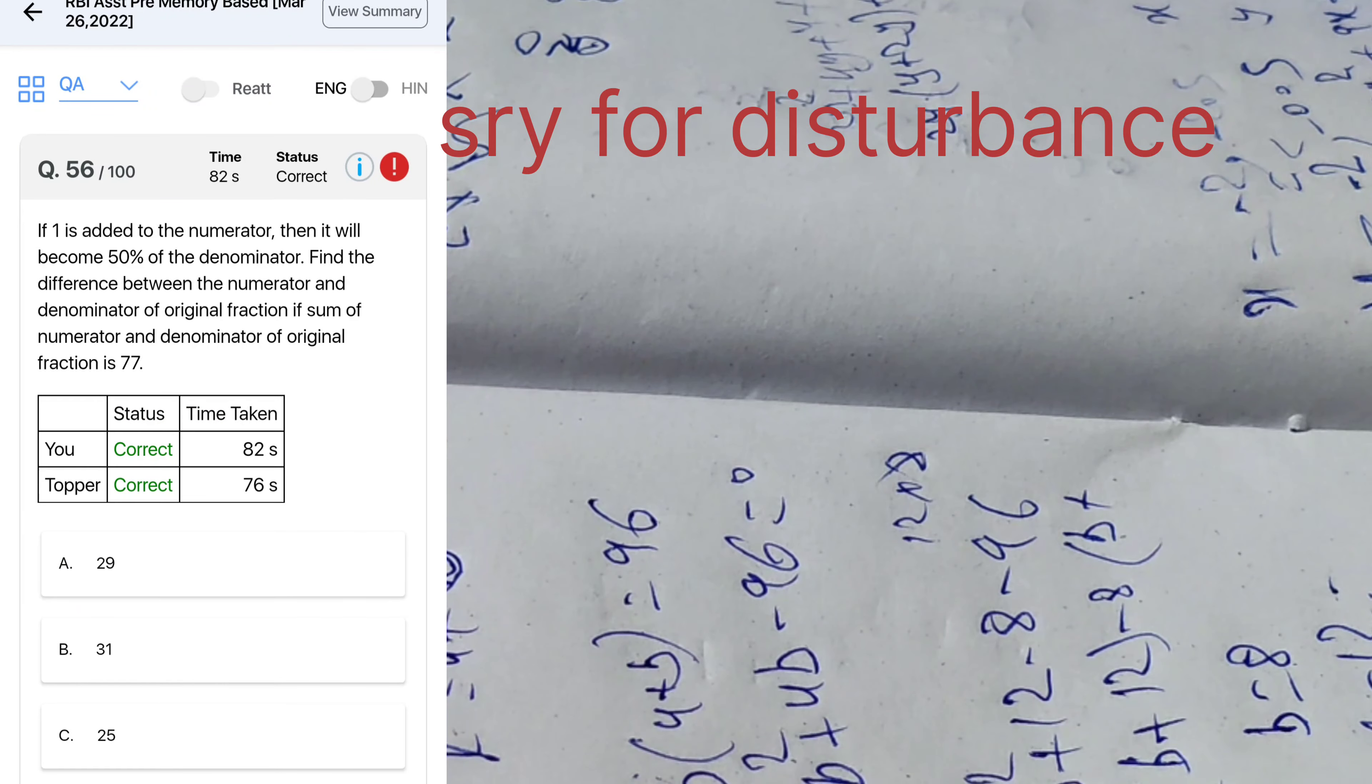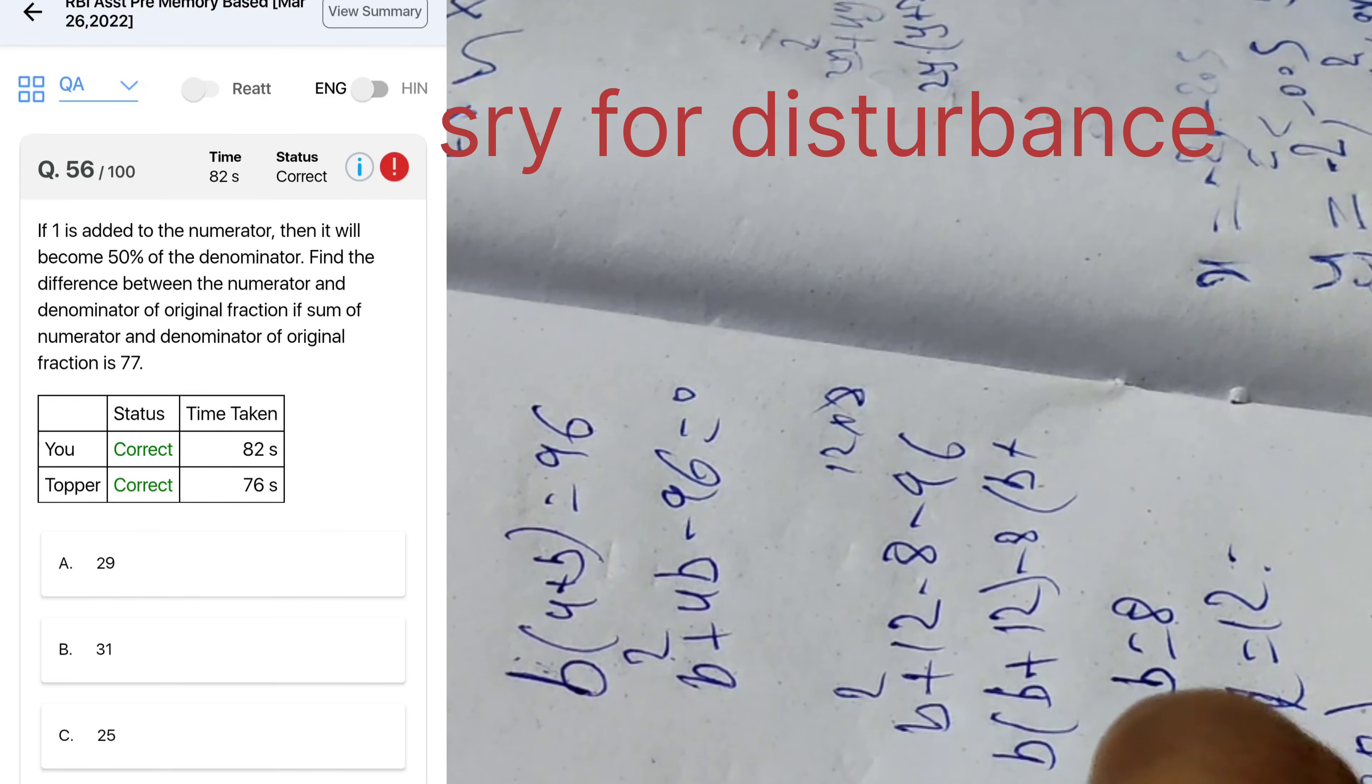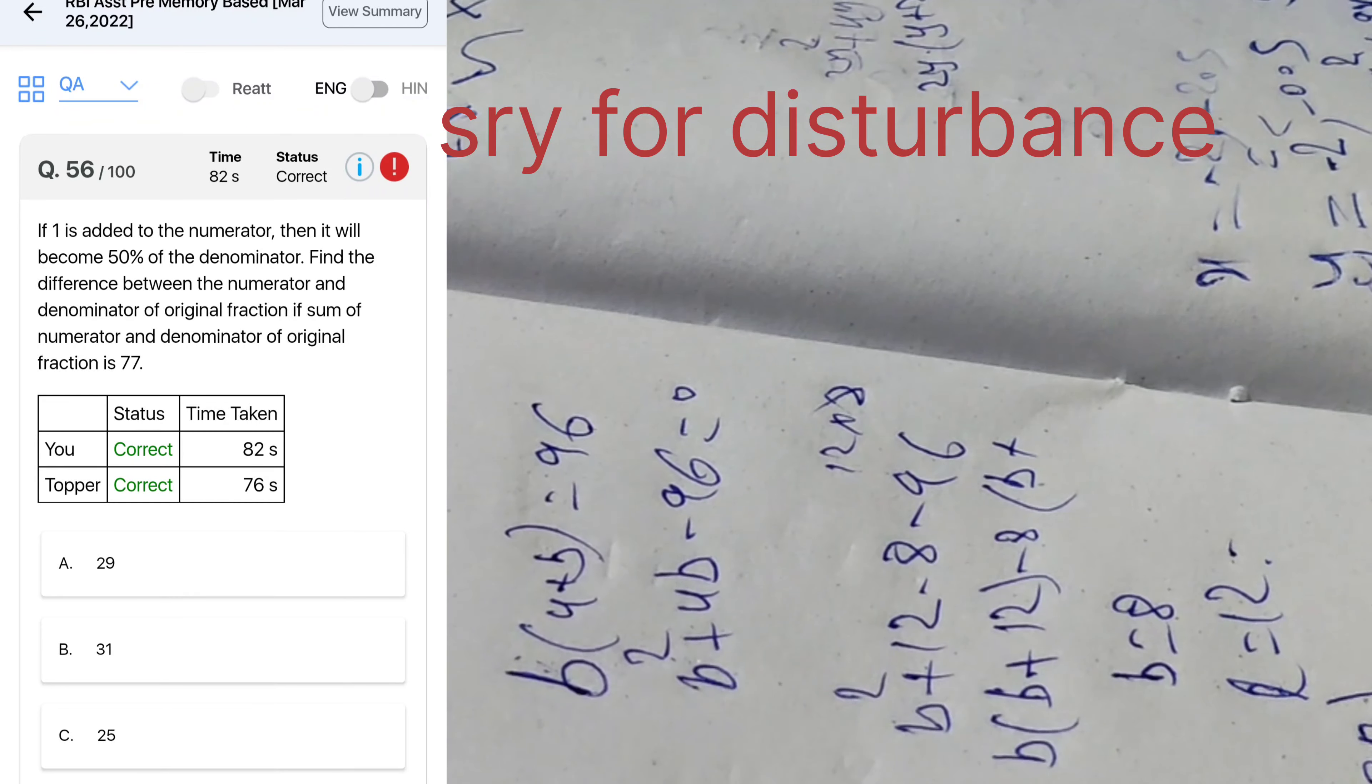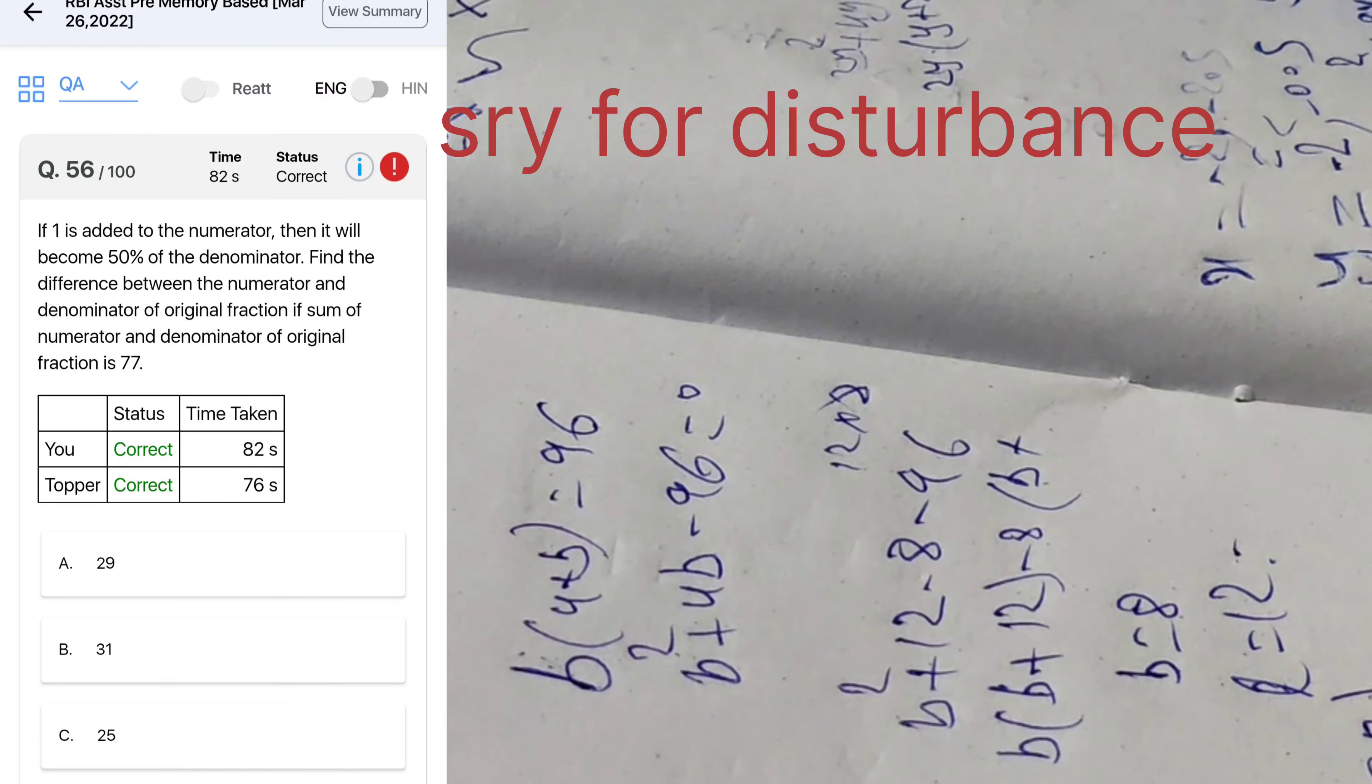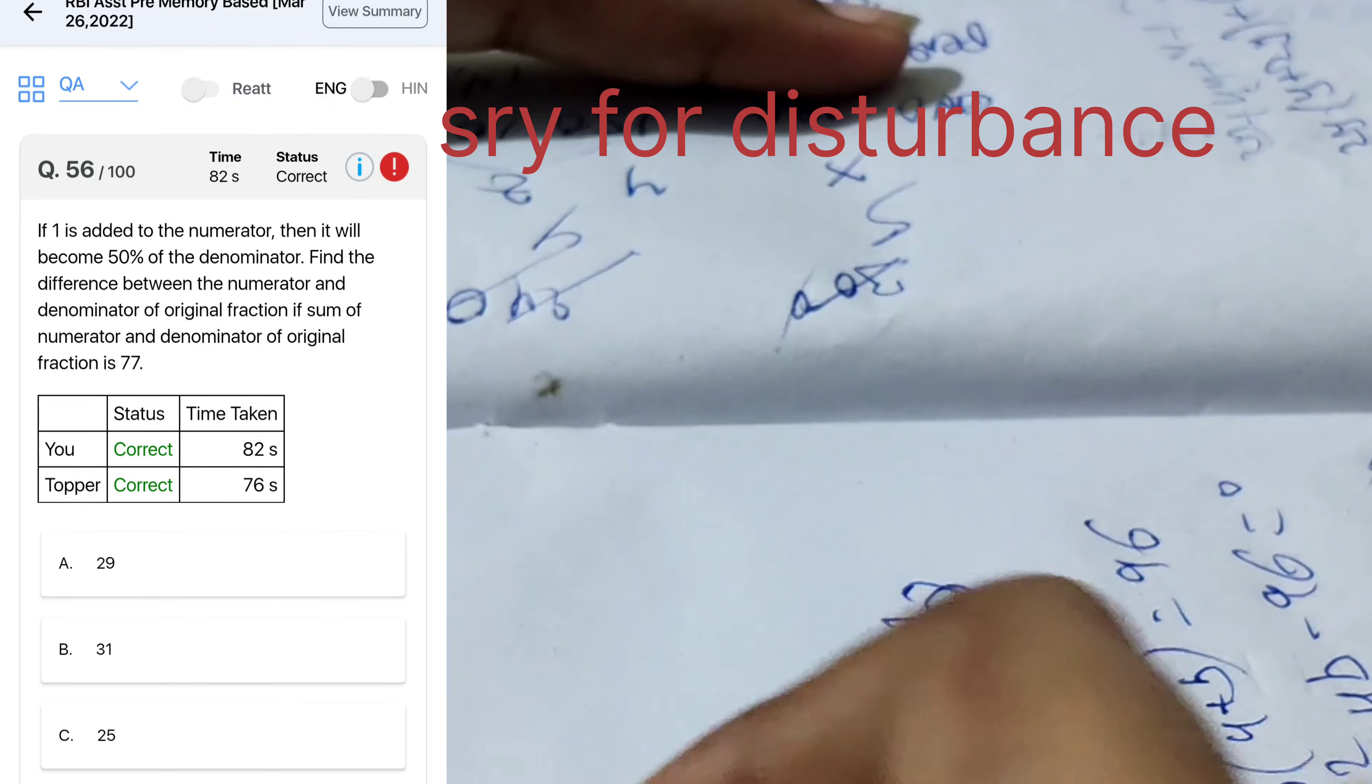Next question, if 1 is added to the numerator x plus y, is fraction x plus 1 becomes 50 percent of, then it will be 50 percent of denominator. x plus 1 is y by 2. So 2x plus 2 equal to y. y minus 2x equal to 2. y plus x is 77. So if we cancel y, so minus 3 way 75, so y is 25 and x is 25. And remaining y is 52, I think. So here difference between the original fraction, x is 27. So 52 minus 25 is 27.